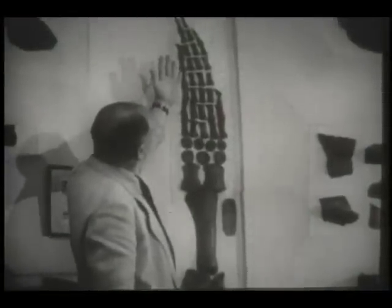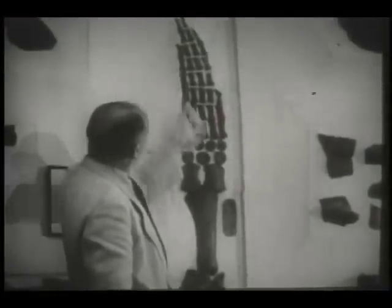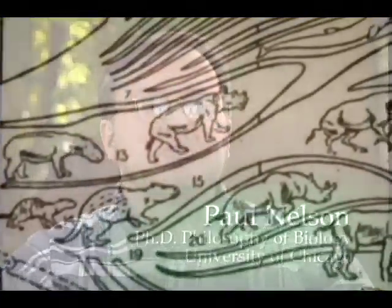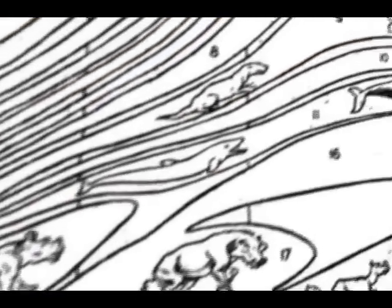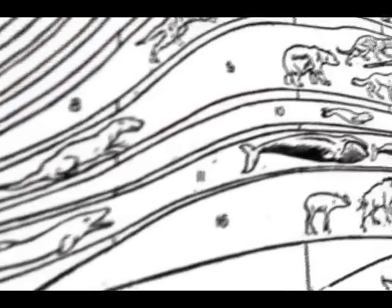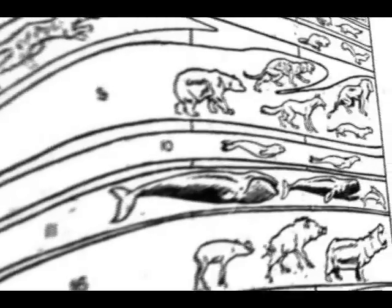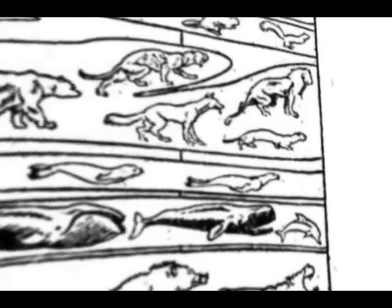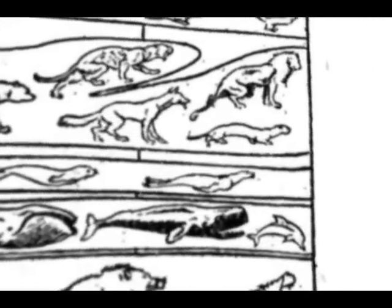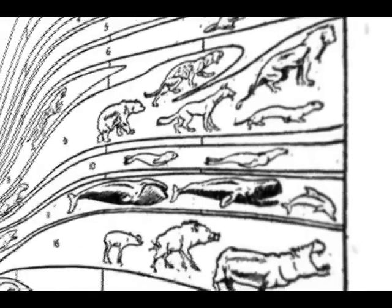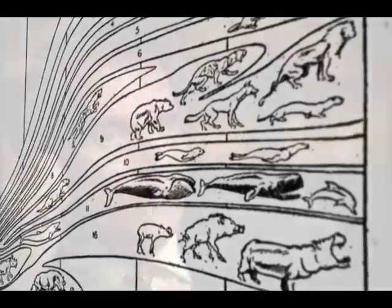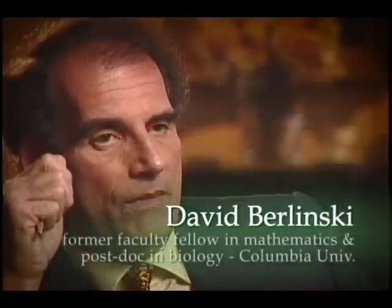Homology was something that biologists discovered long before Darwin. Aristotle knew about homology. The real question about homology is how do we explain it? There are plenty of examples of homological structures in biology which are obviously not based on common descent.